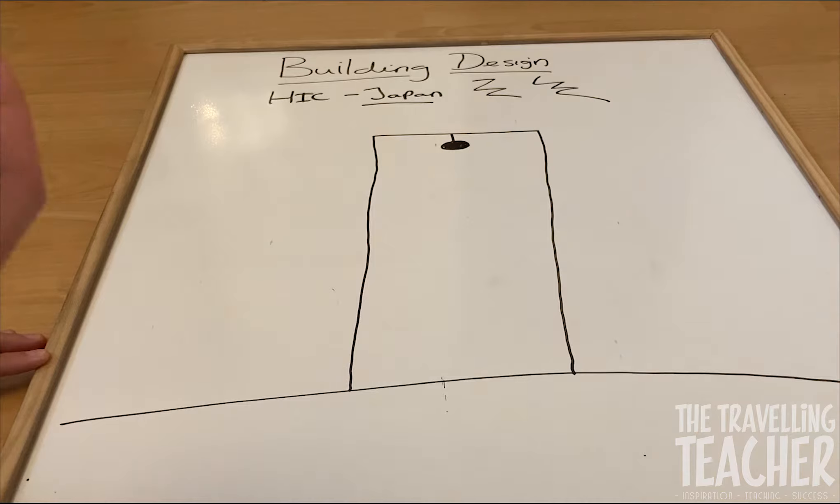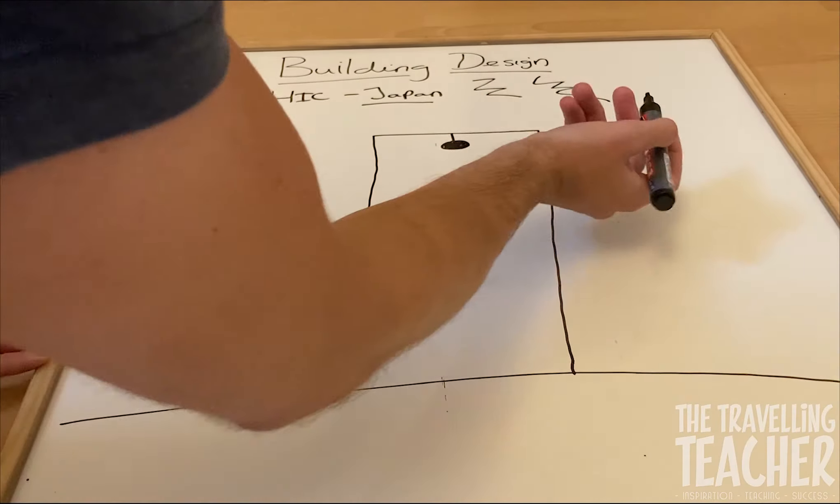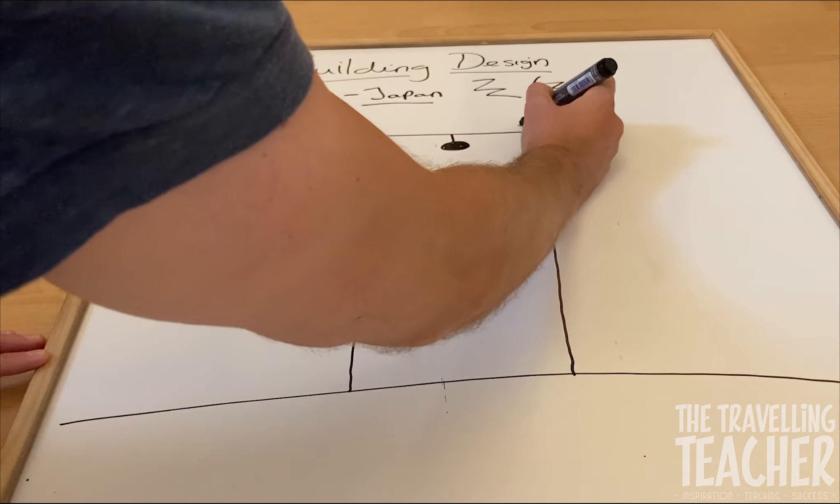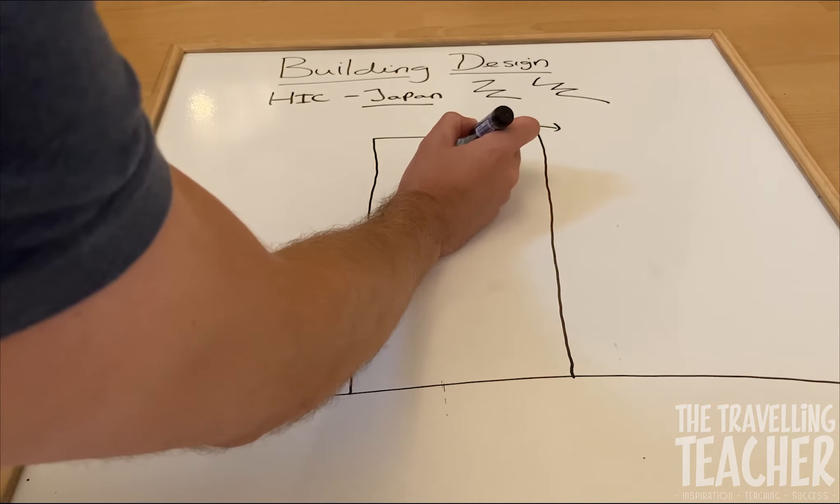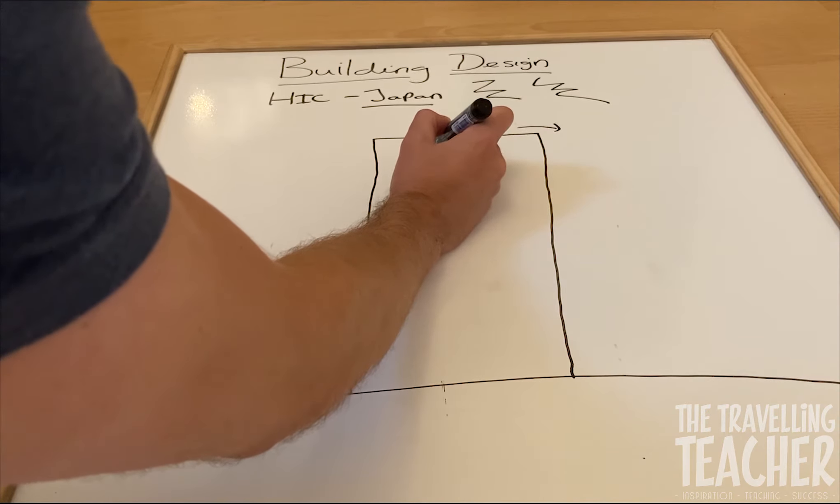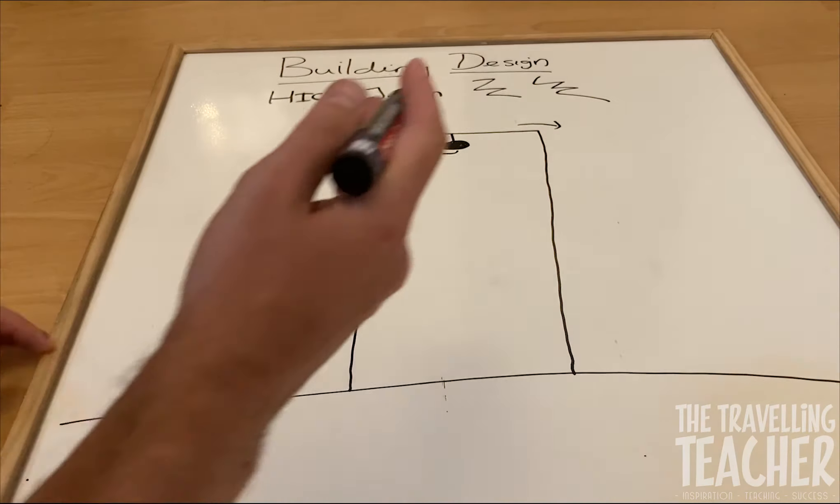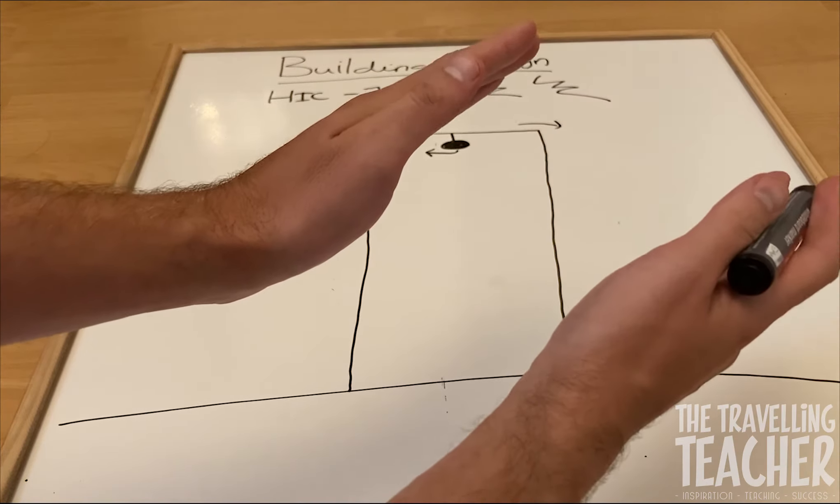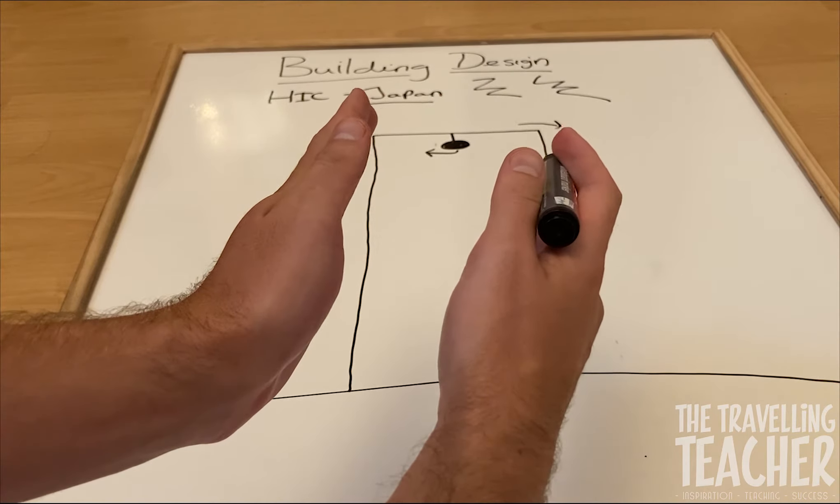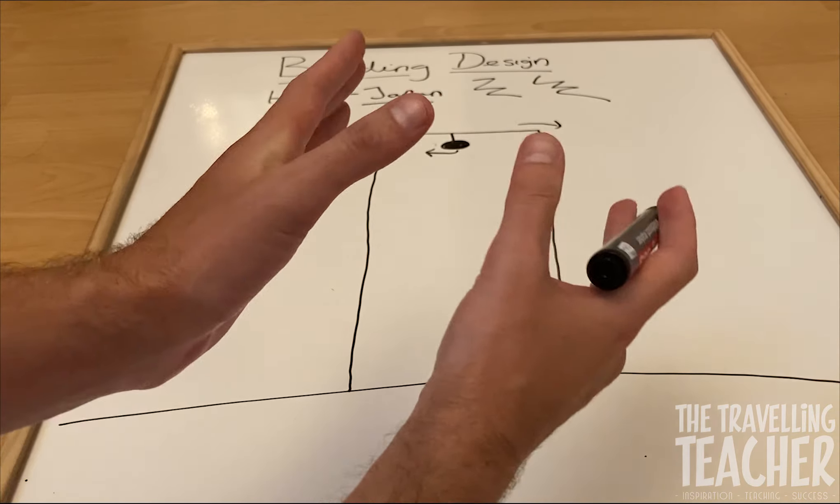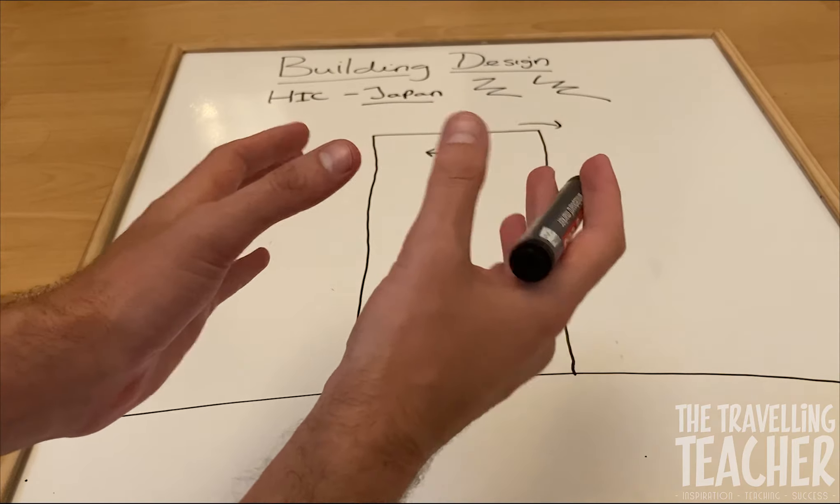Now the purpose of a pendulum is if the building sways one way, the pendulum will provide a counterbalance by swaying in the opposite direction. So a building might go one way, the pendulum may swing it out, and hopefully the building will remain standing because the weight will act as a counterbalance.